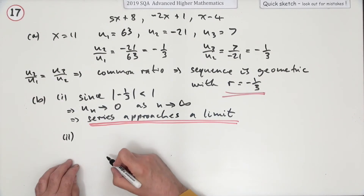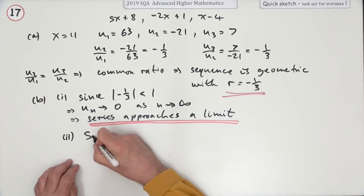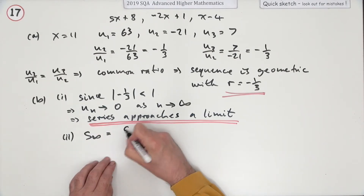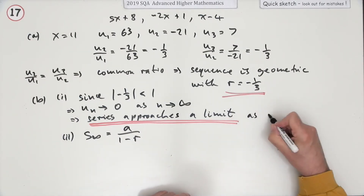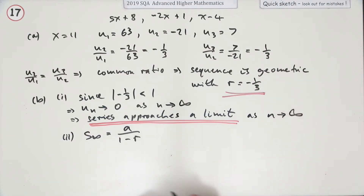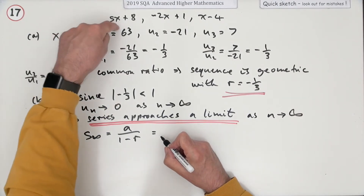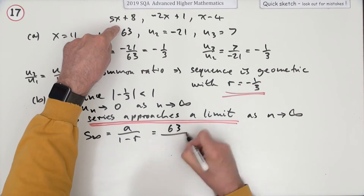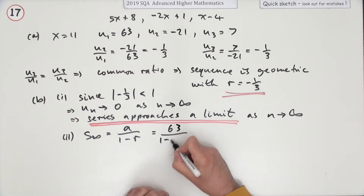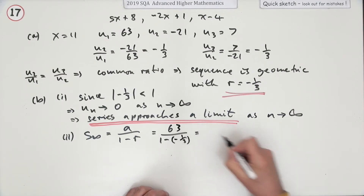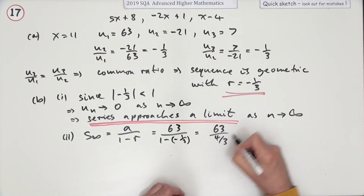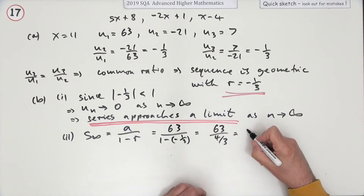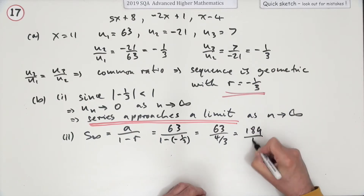Now calculate the sum to infinity. The formula is S∞ = a over (1 minus r). Here a is the first term, which is 63, and r is negative one third, so the denominator is 1 minus (negative one third) = four thirds. So you get 63 over four thirds, which equals 3 times 63 over 4, giving 189 over 4.